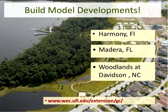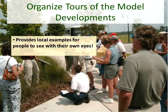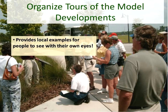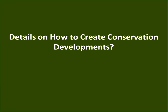Examples include Harmony, Florida; Madera, Florida; and Woodlands at Davidson in North Carolina — there's a website where you can explore these communities. Once you have model developments, provide local examples for people to see with their own eyes — have tours. We've made inroads with conventional developers by taking them to green developments and showing how different practices were designed and implemented, including the monetary savings. For example, when removing irrigation, turf grass, fill, and grading on a lot, developers can save up to $2,300 per lot — which adds up significantly across a large community.